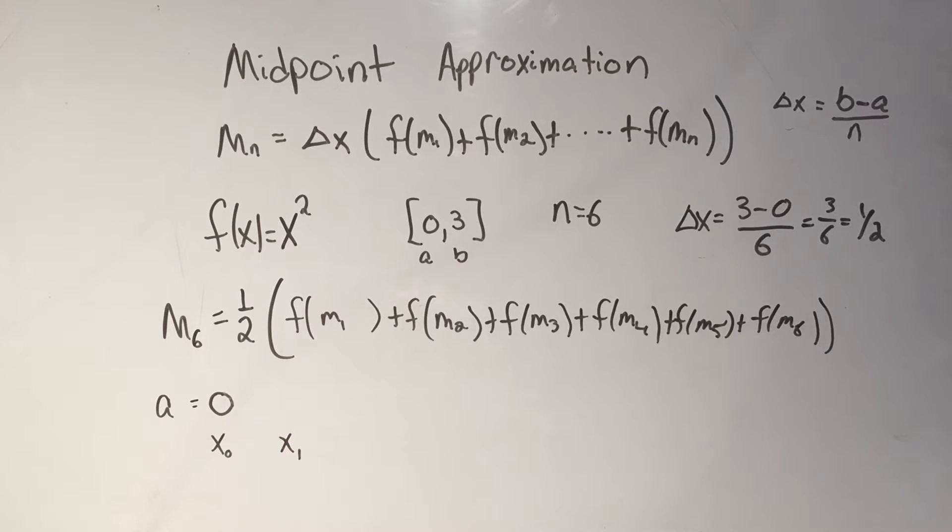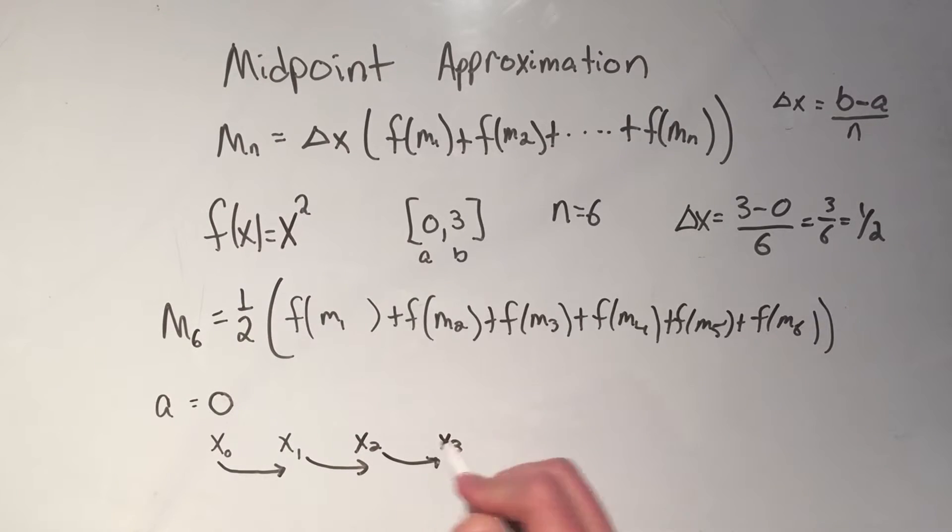What would be x1? If you remember from the left-hand and right-hand Riemann sums, x0 to x1, or even x1 to x2, x2 to x3, and so on. These were all a jump by delta x.